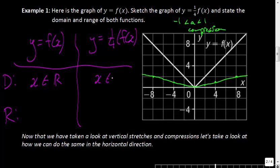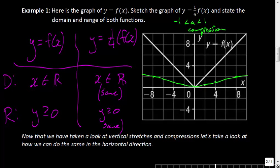Next, has the range changed at all? For our original function, y had to be greater than or equal to 0 — the smallest value is at 0. For our new function, y is also greater than or equal to 0. It's the same. So even though this function was not a quadratic — it was an absolute value function — it really follows all the same principles. Even with a cubic, all you would do is keep the x-values the same and quarter the y-values.